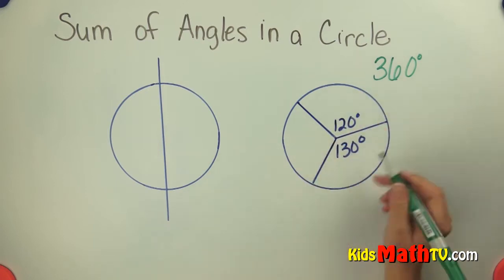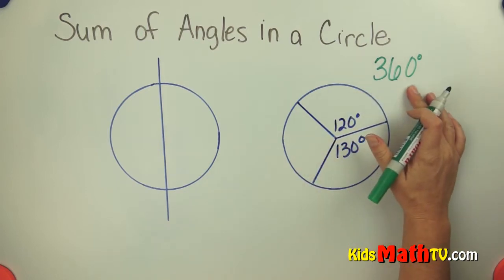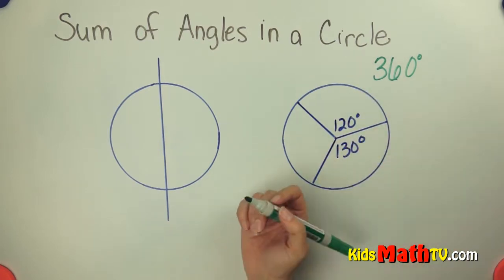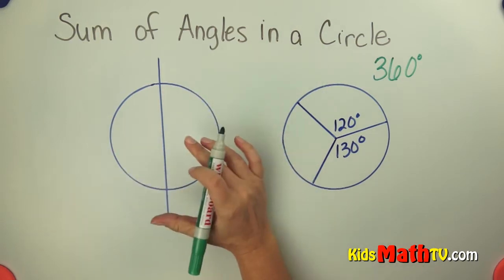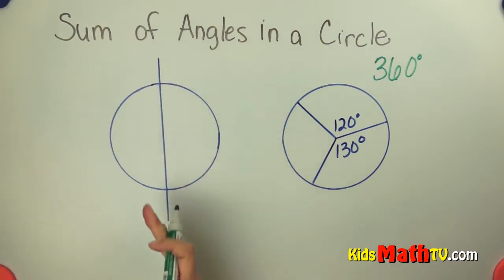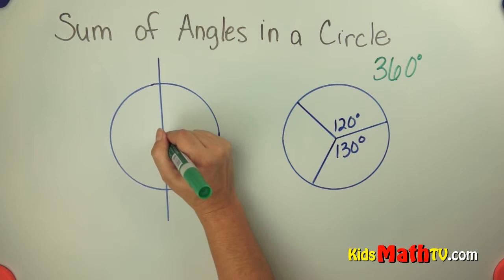The total measure of the angles in a circle is always 360 degrees. The way that we can prove that is here's a circle. You have to pretend that it's a perfect circle and my line has gone perfectly through the center of the circle.